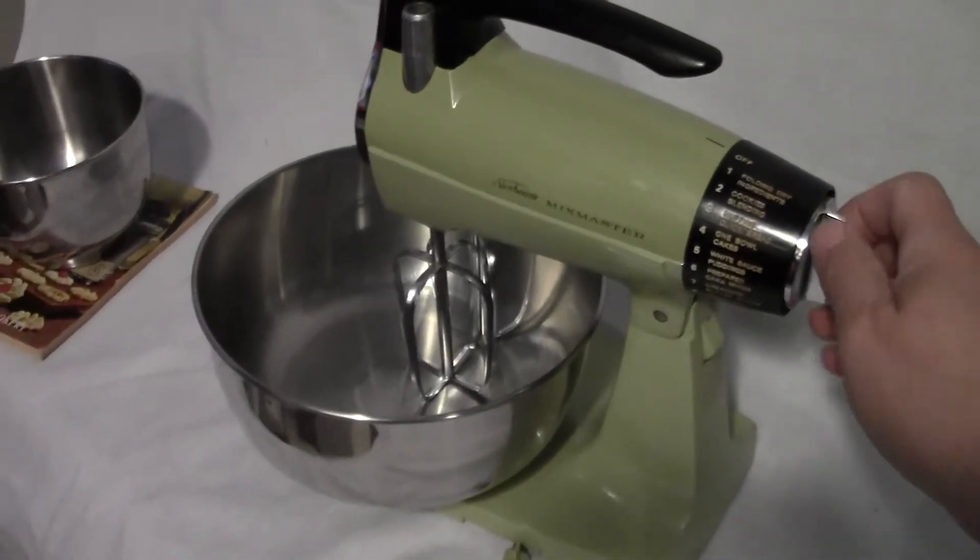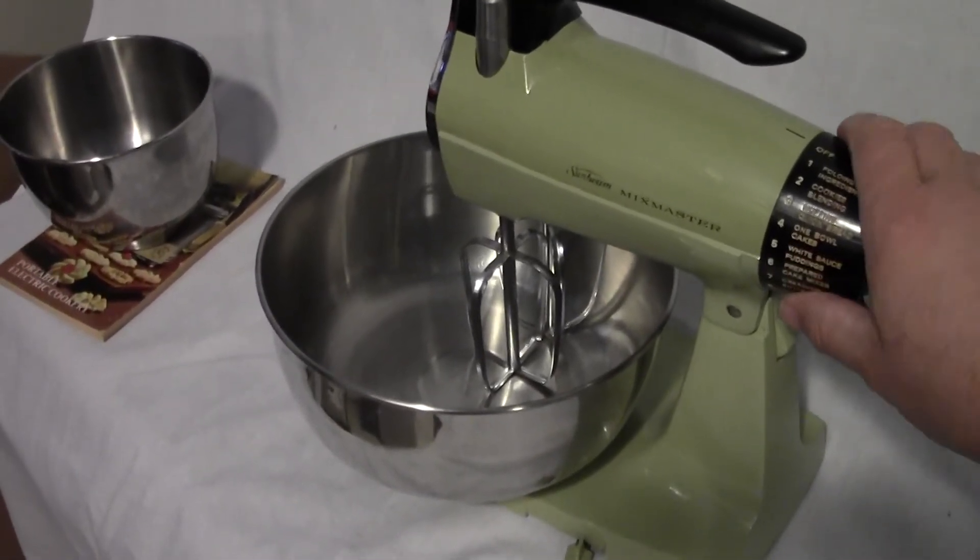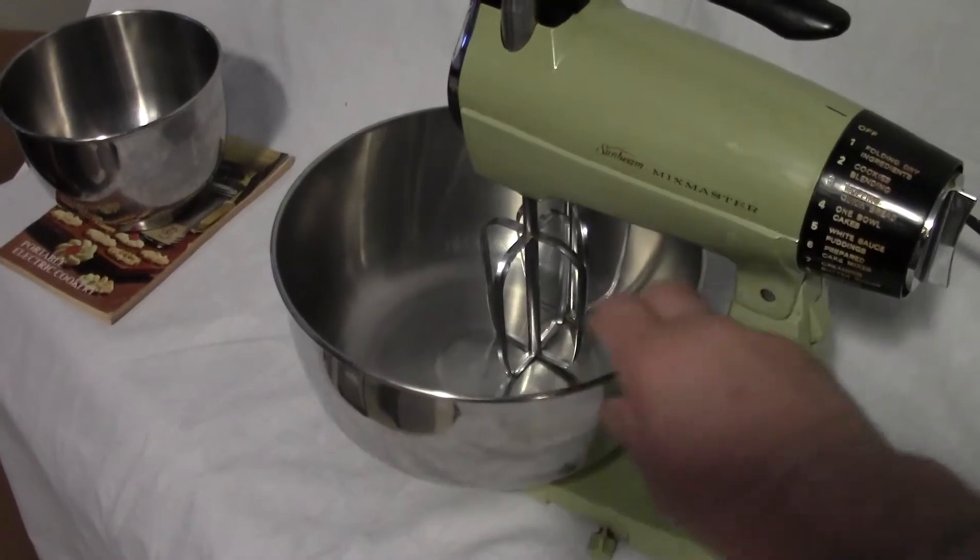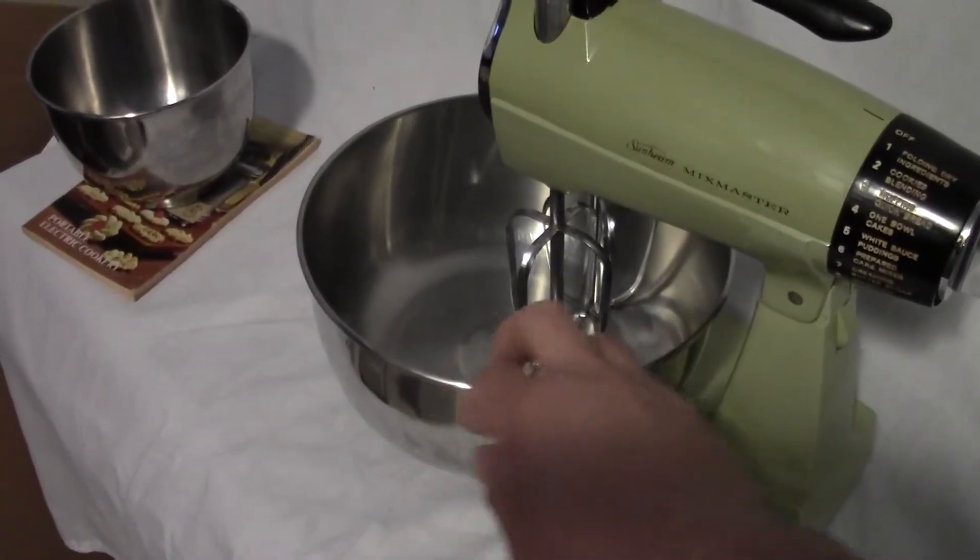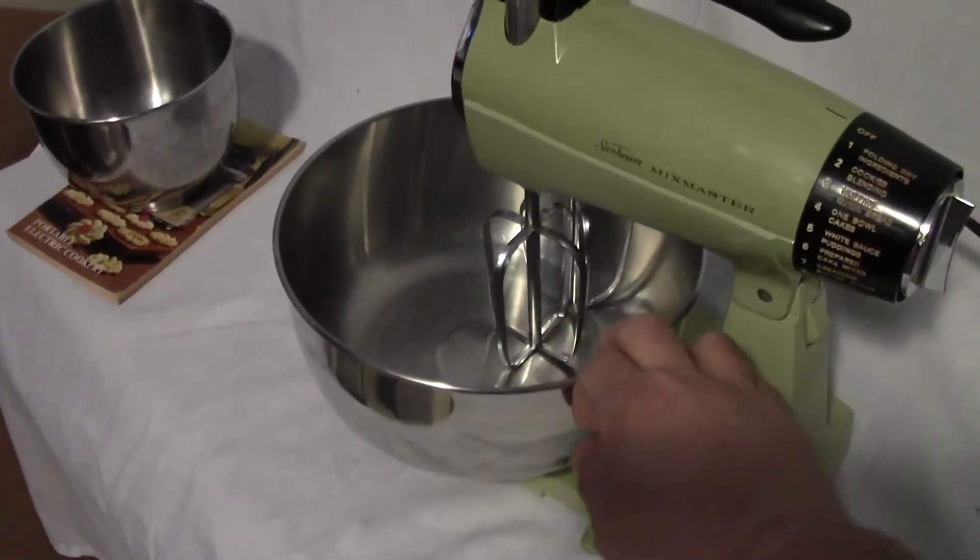And you have the controls right here. It's off right now. And this spins around so you can mix your material up. That's why you have it on the side for the big bowl setting like that.